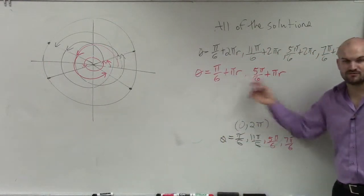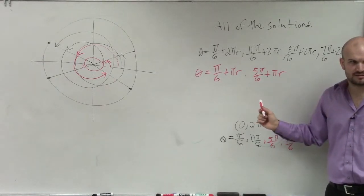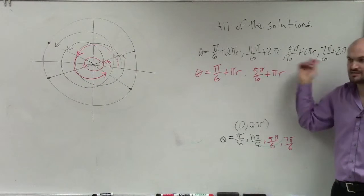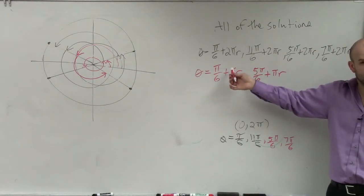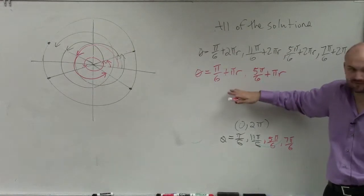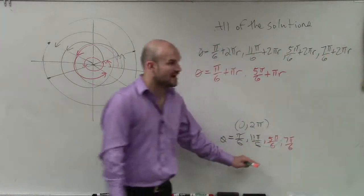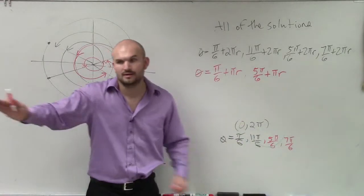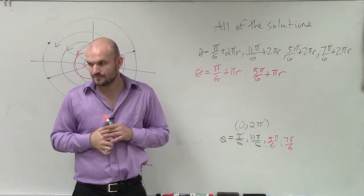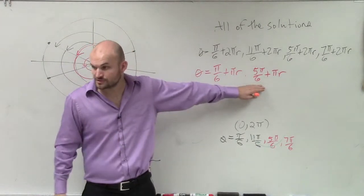So this — pi over 6 plus pi r and 5 pi over 6 plus pi r — covers all my solutions. Writing all four values with plus 2 pi r is also correct but redundant. The four values alone would only be correct between 0 and 2 pi. If I ask you to find all solutions on a test, I'm going to want the simplified version with plus pi r.